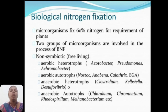Examples for aerobic heterotrophs: Acetobacter, Pseudomonas, Achromobacter. Example for aerobic autotrophs: Nostoc. Examples for anaerobic heterotrophs: Clostridium, Klebsiella, Desulfovibrio. Examples for anaerobic autotrophs: Chlorobium, Chromatium, Rhodospirillum, Methanobacterium, etc.